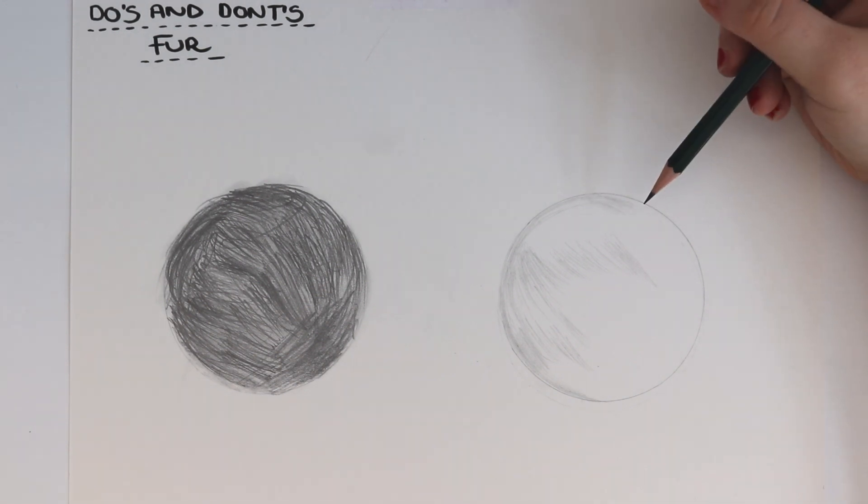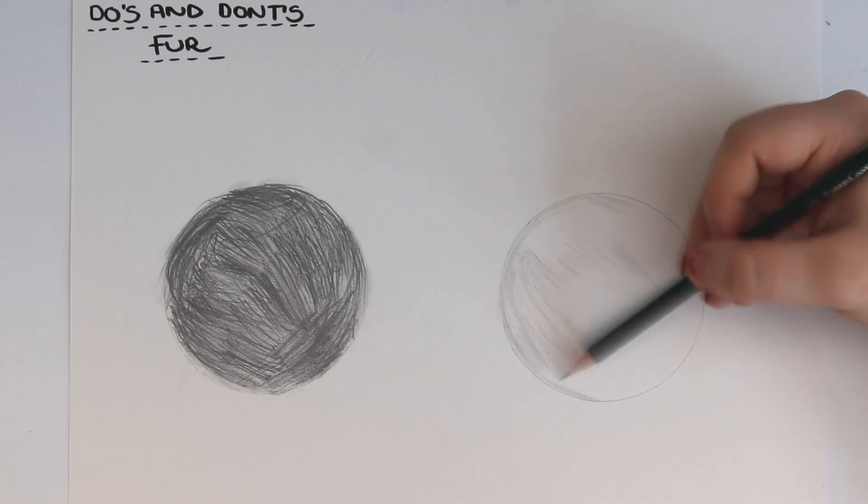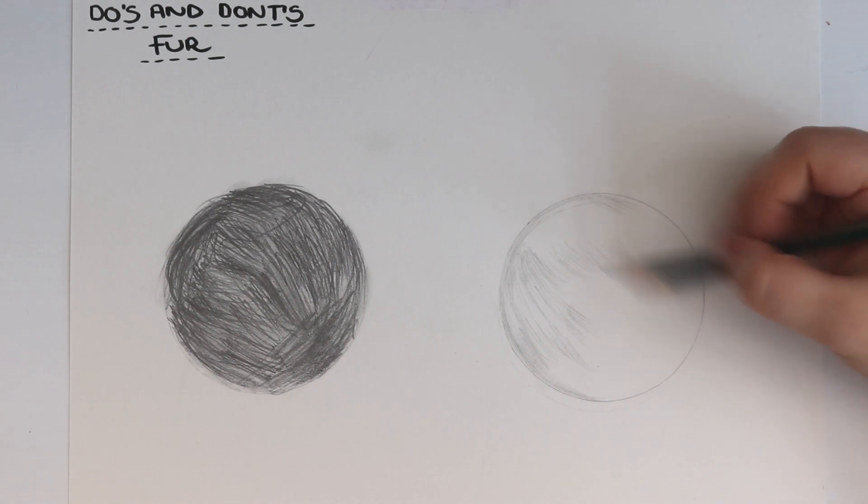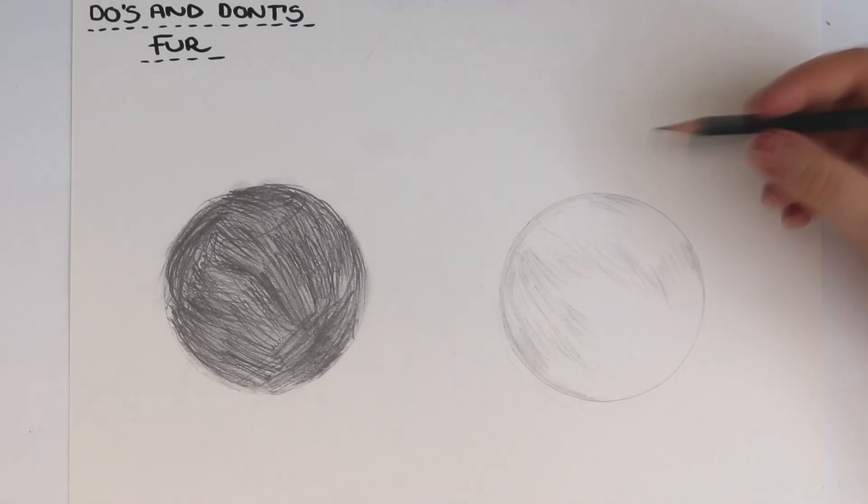I'm using the 2H pencil, and notice how I'm holding that pencil. Hand position is really important to get the right techniques. By holding the pencil halfway down it enables me to get an even distribution of pencil pressure, not too hard and not too soft. I'm also working much slower with building up the fur.